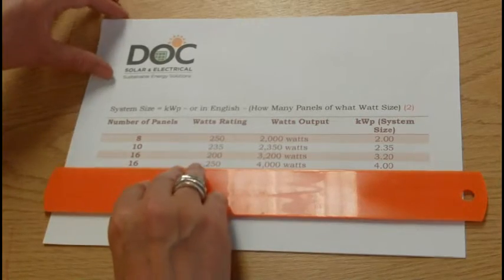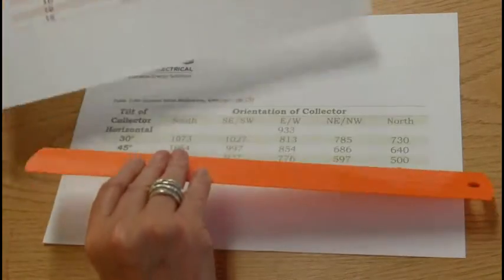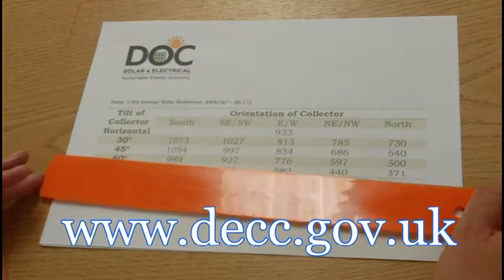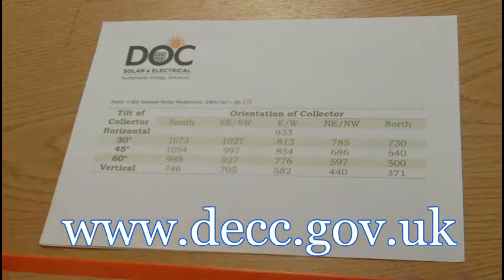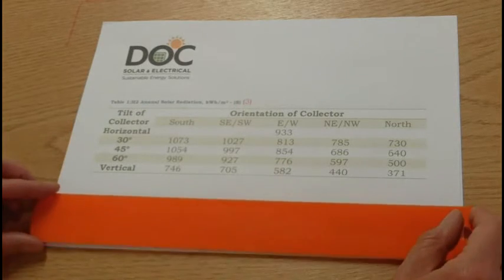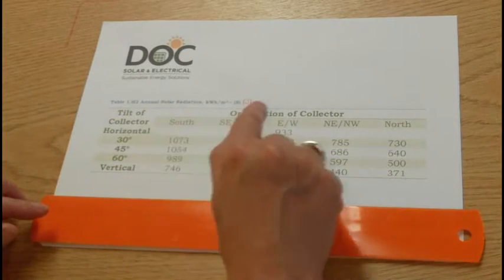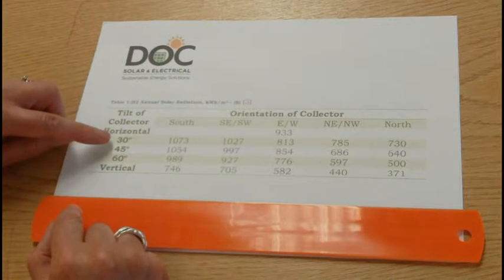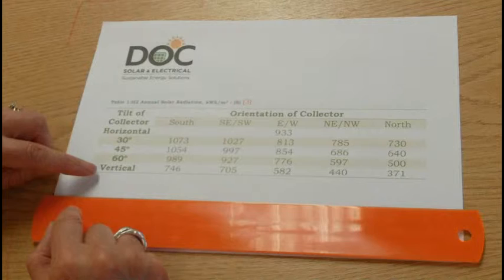Now let's move on to number 3, the solar irradiation factor. This table can be found on the DECC website, and it covers the orientation of the collector and the tilt of the collector. The orientation goes from south to north and horizontal, and the tilt through 30 degrees to 90 degrees vertical.